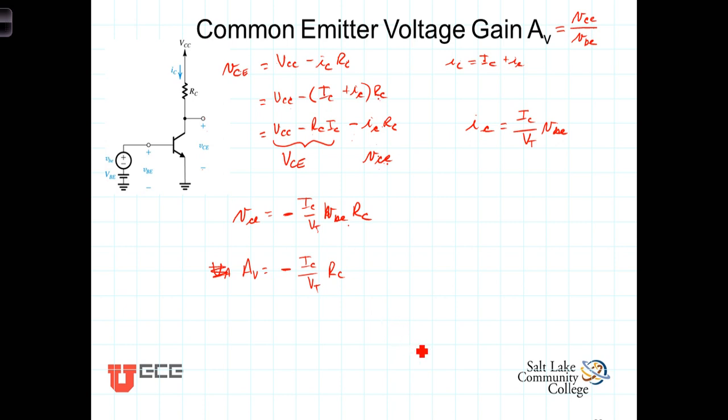Now you'll also recall that this ratio of the collector current to the thermal voltage, I sub C over VT times R sub C. So for this configuration, we can rewrite the voltage gain as being equal to negative G sub M times R sub C.